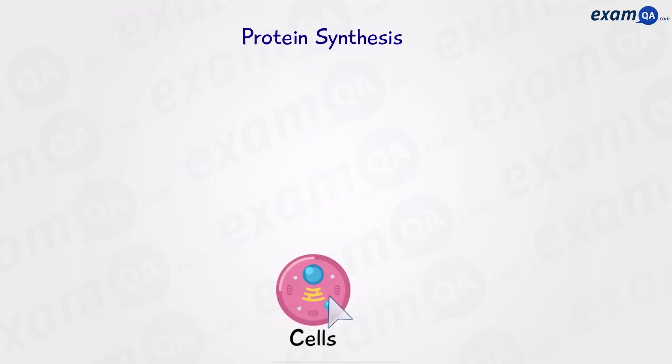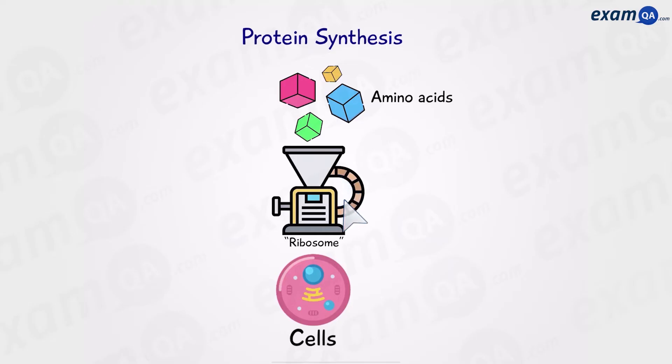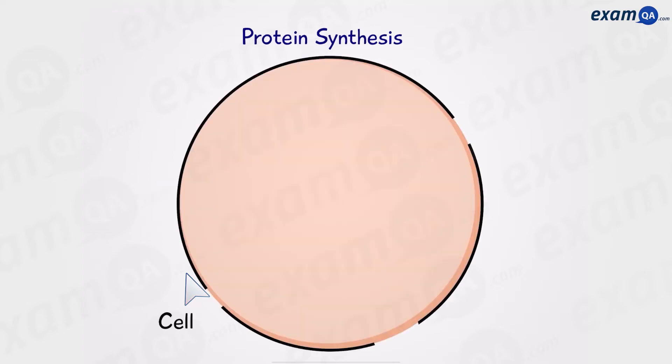Proteins are made within cells. Amino acids are combined together in a special cellular machine called a ribosome, and this creates our protein. So it looks quite easy. Let's look at this in a bit more detail. So we can think of the cell as a protein-making factory. The process of protein synthesis starts off in the nucleus.